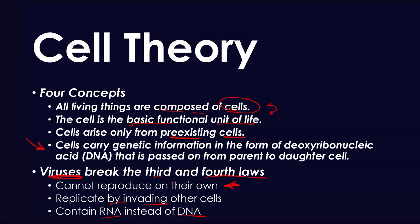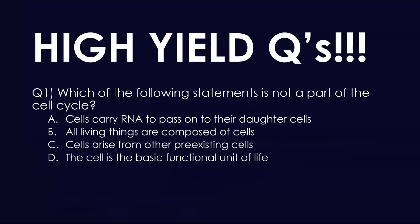Let's do some high yield MCAT questions. Question one asks: which of the following is NOT a part of cell theory? Go ahead, read the answers, pause the video, and come back when you're ready. The answer is: 'cells carry RNA to pass on to their daughter cells.' That is not true because cells carry DNA, not RNA. If it said DNA, it would be correct. The rest of the answer choices are true tenets of cell theory.